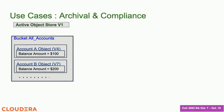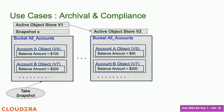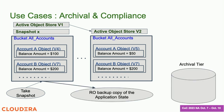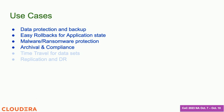Another use case is compliance. There are different government regulations in the US and EU which mandate that you keep a copy of data for a certain amount of time. I take an app-consistent image, let modification continue on the active object store, but I have a stable image in snapshot X. I can have a separate archival tier and move my snapshot to it. The primary use case for compliance is not so much restore — it's more about keeping the data around to satisfy some compliance regulation.